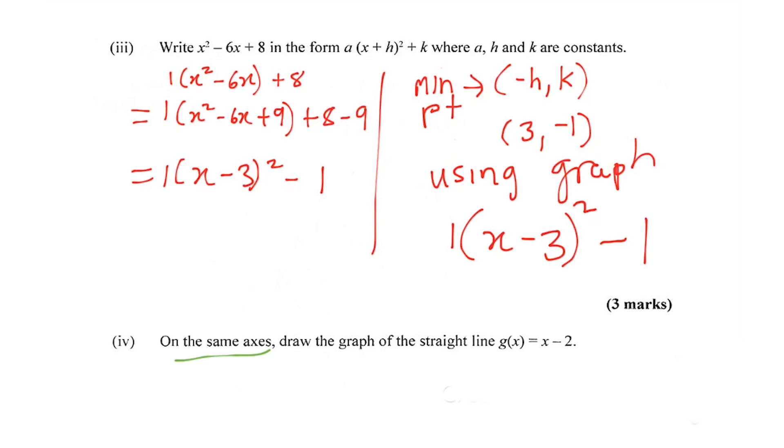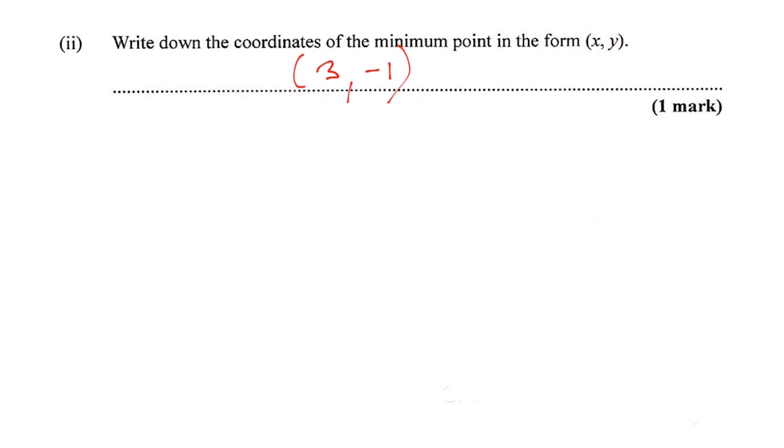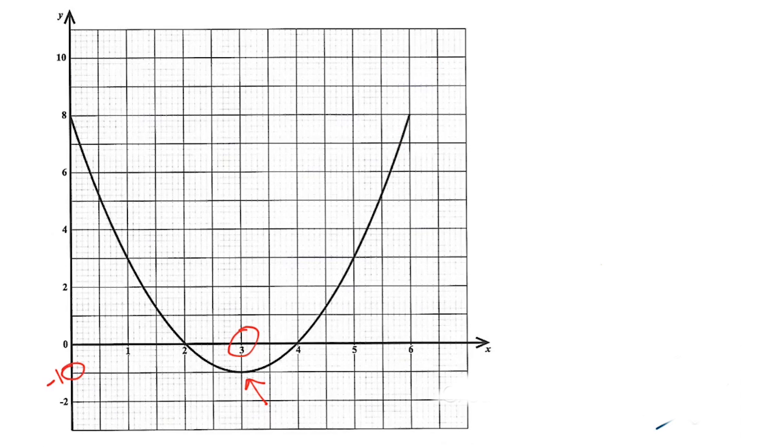The next part of the question asks us: on the same axis, draw the graph of the straight line g(x) = x - 2. Part 4 is to draw a straight line on the graph. The line is g(x) = x - 2, in other words y = x - 2. All you need to do is find some sample points. Let's say if we put in x = 0, y would be -2, so that's a point on the line. When x is 4, y would be 2.